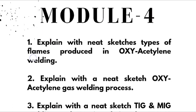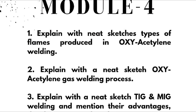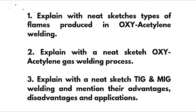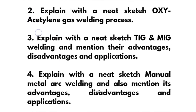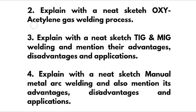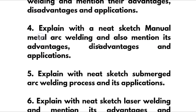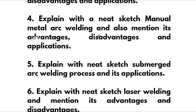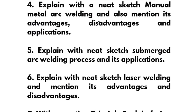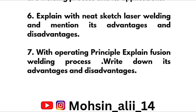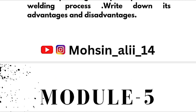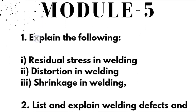Also in Module 3: explain different types of forging defects and explain different types of rolling mills. In Module 4, we have: explain with neat sketches the types of flames produced in oxy-acetylene welding; explain the oxy-acetylene gas welding process; explain TIG and MIG welding with neat sketches and mention their advantages, disadvantages, and applications; explain manual metal arc welding and mention its advantages, disadvantages, and applications; explain submerged arc welding process and its applications; explain laser welding with neat sketch and its advantages and disadvantages; and explain fusion welding process with its advantages and disadvantages.